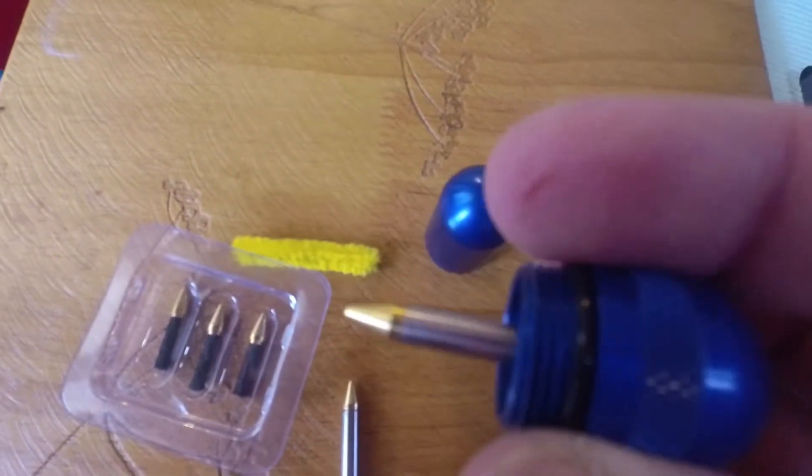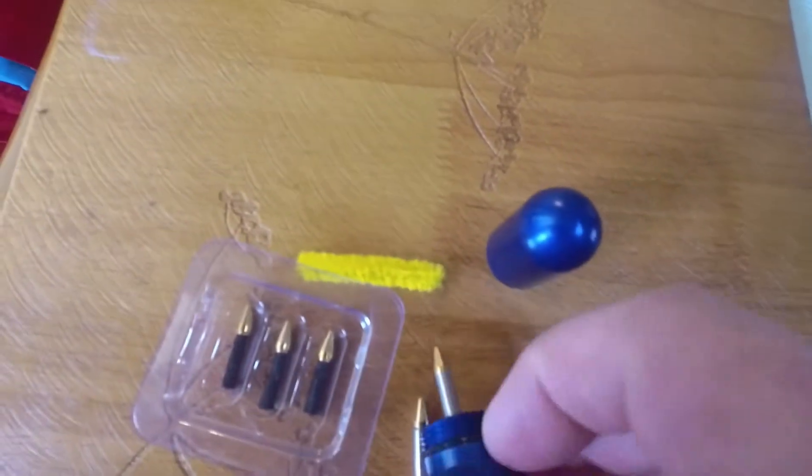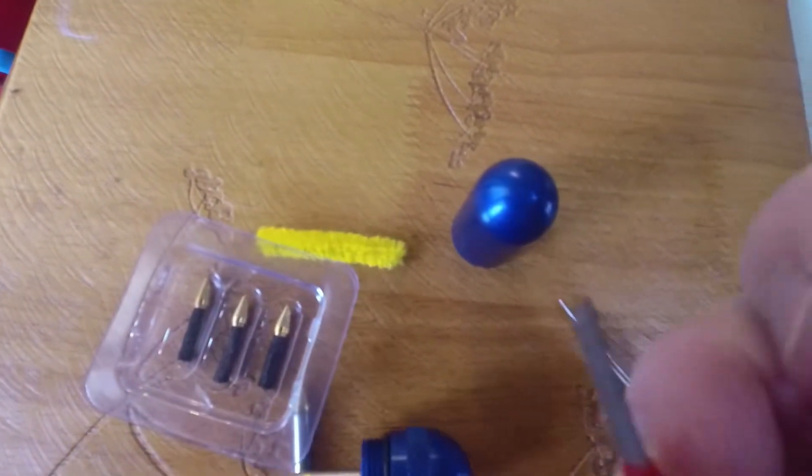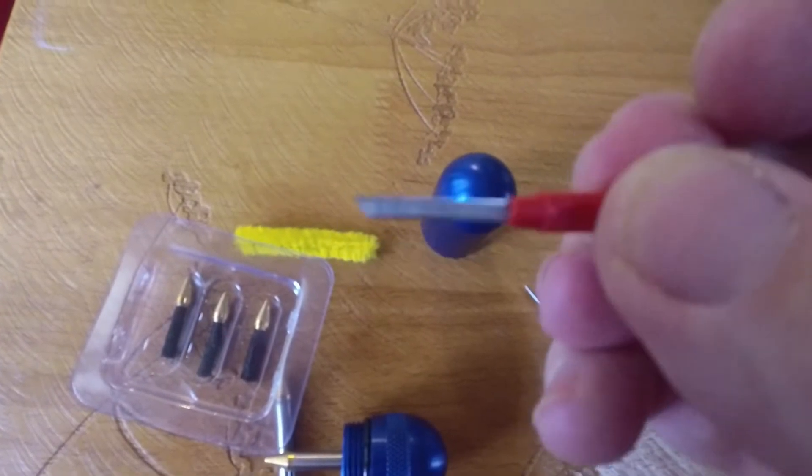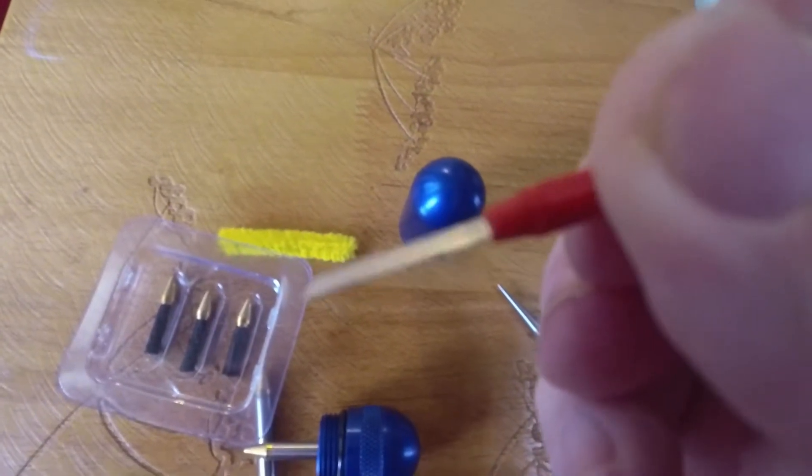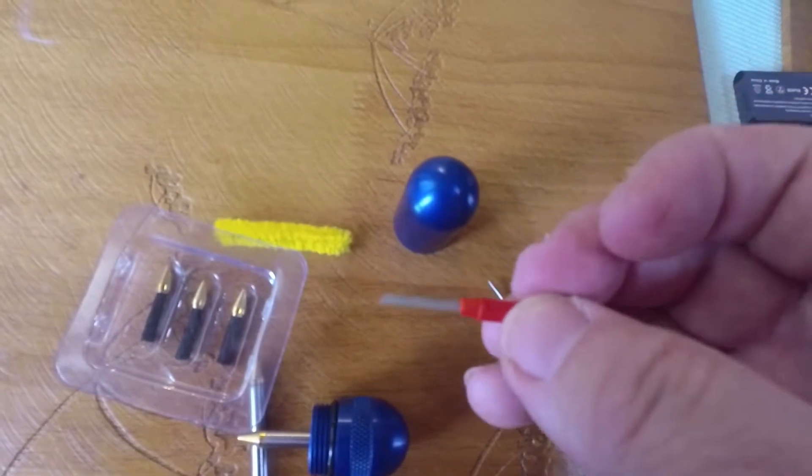You have one ready to use in the adapter already screwed in. This is a little tiny knife blade for cutting off the excess plug that sticks out of your tire.